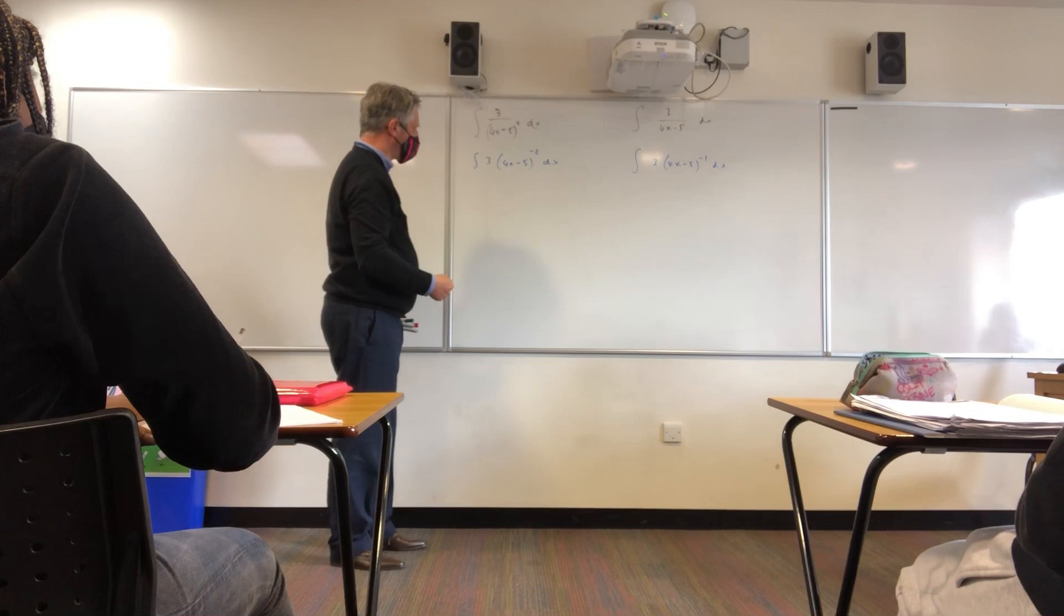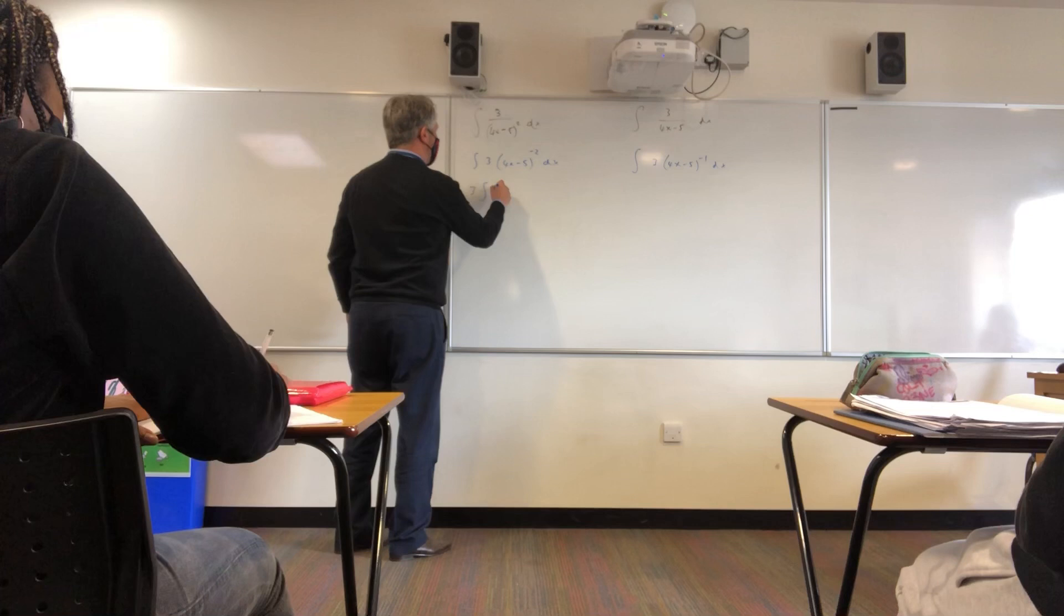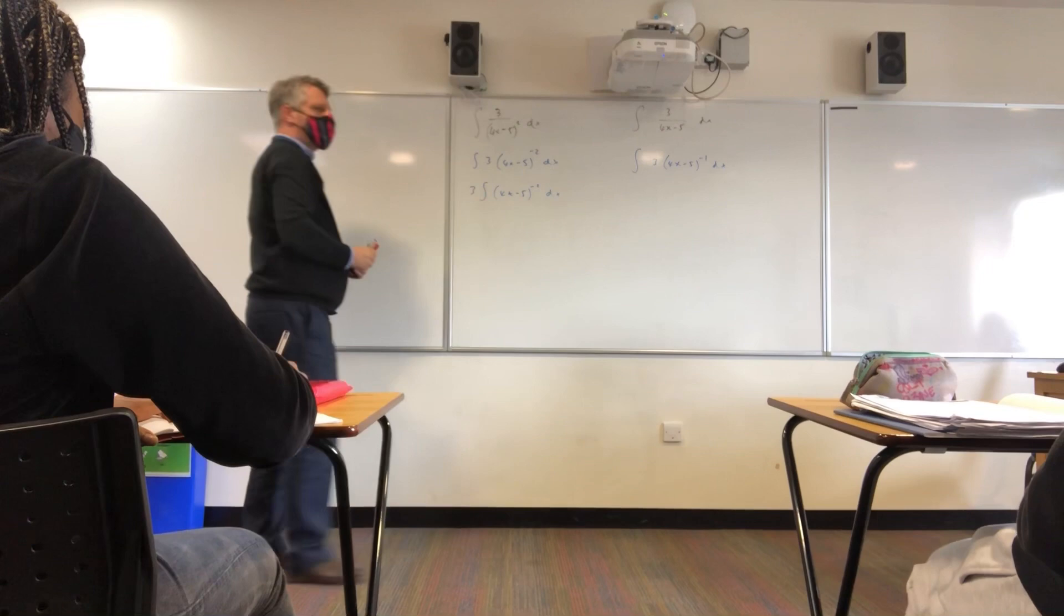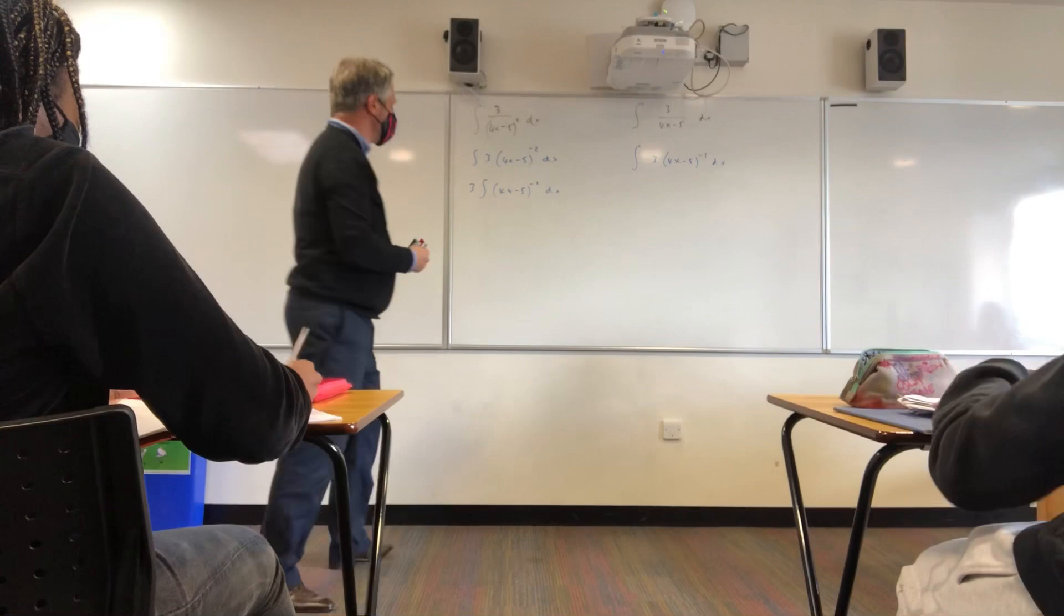So if we look at this example here, that would be the same as 3 times the integral of (4x - 5) to the power of -2 dx. So if you copy those down for me and have a go at that one for me, give me whatever answer you think that's going to be. So you've got 4x - 5 in brackets, the power of negative 2.